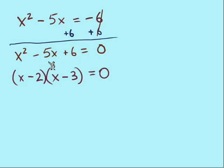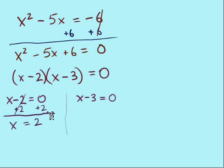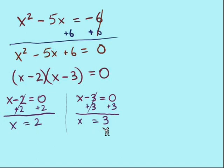Our leading coefficient is 1 for this trinomial, meaning we look for a pair of numbers that multiply to positive 6 and add to negative 5. That pair is negative 2 and negative 3. Now that it's factored, we split into two equations: x minus 2 equals 0 and x minus 3 equals 0. Adding 2 to each side gives our first solution x equals 2. Adding 3 to each side gives our second solution x equals 3. Our solution set is {2, 3}.